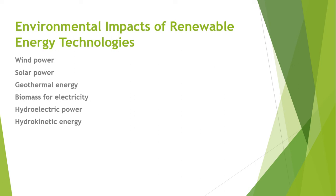The type and scale of these impacts vary greatly depending on the scale and technology used. Solar systems also dissipate a significant amount of heat energy during the production of photovoltaic systems.